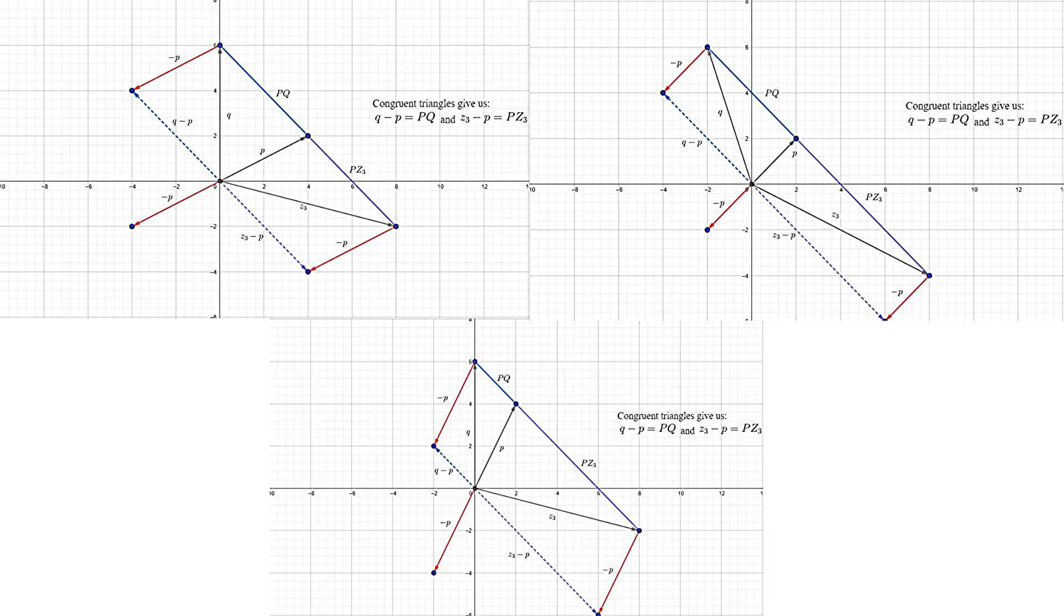We can perform vector subtraction by adding the negative of the vector we want to subtract to the head of the other vector, which we do here with P, so negative P is shown in red. The dotted lines show the end vectors of Q minus P and Z3 minus P, respectively, and we can see more or less that their ratios correspond with the ratios of PQ and PZ3.